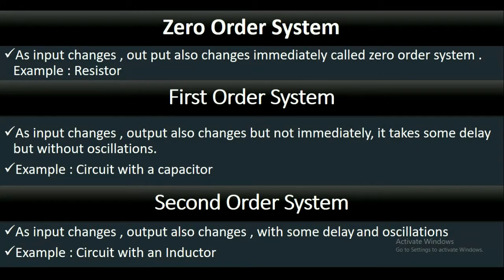The first one is the zero-order system. In the zero-order system, as the input changes, the output also changes immediately. That is called a zero-order system. An example is a resistor.